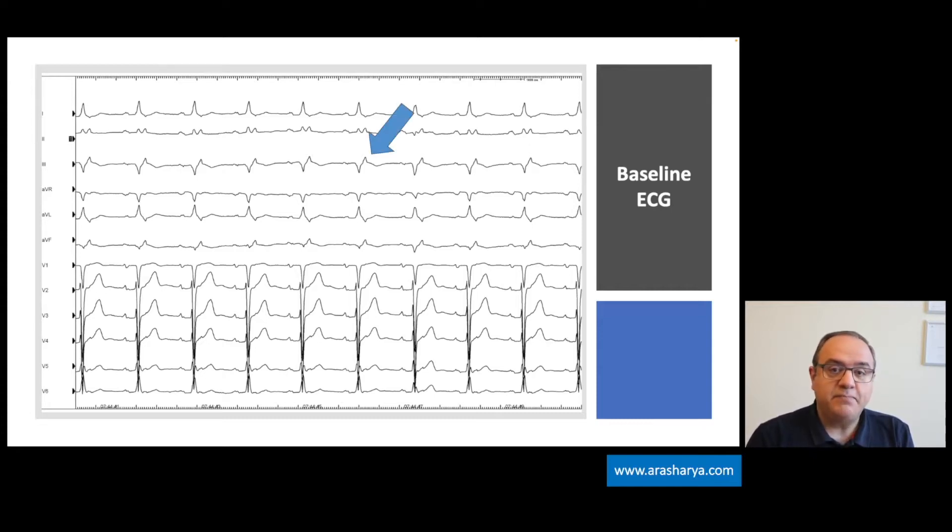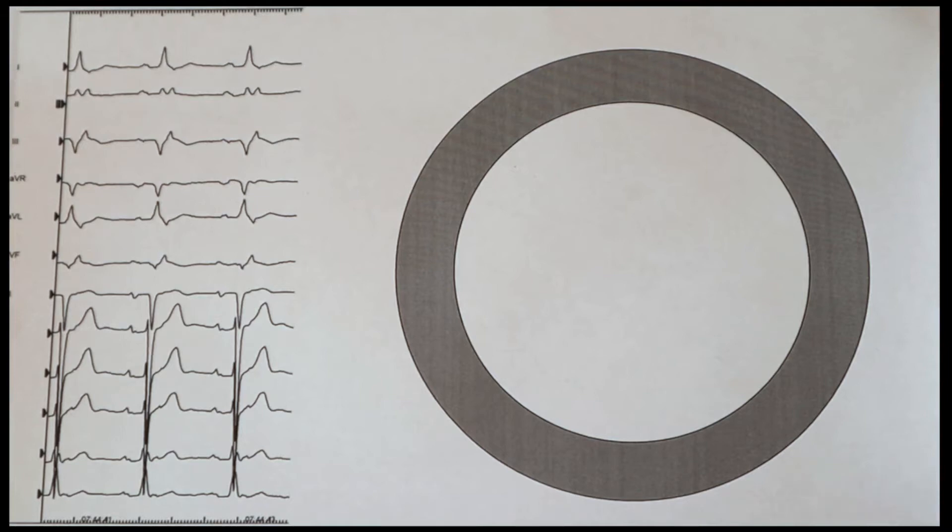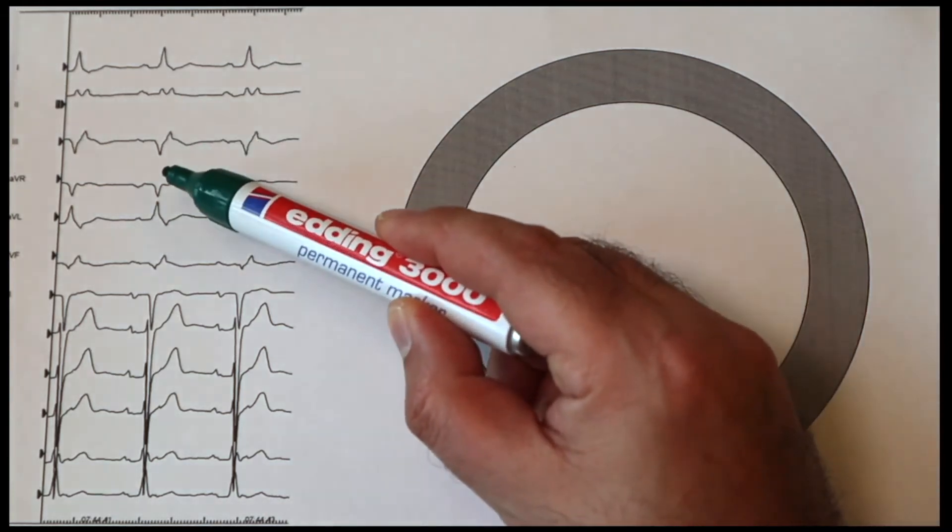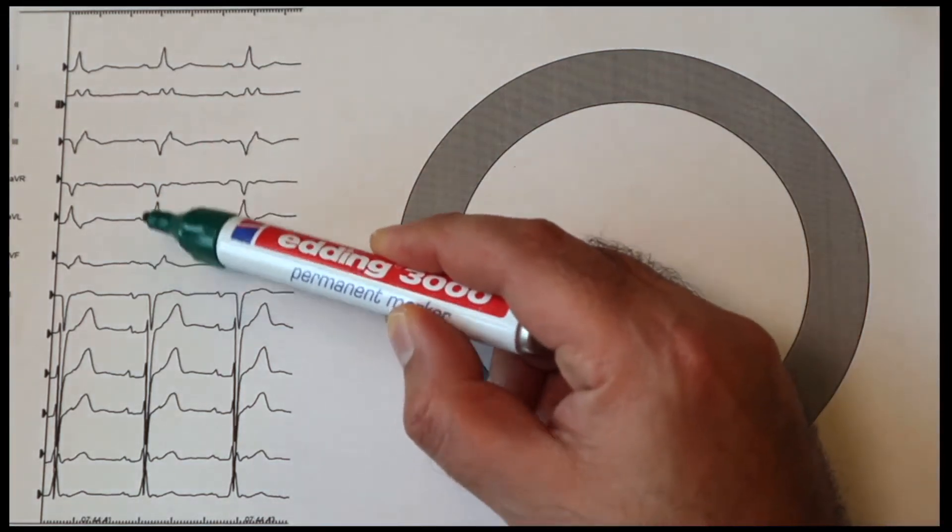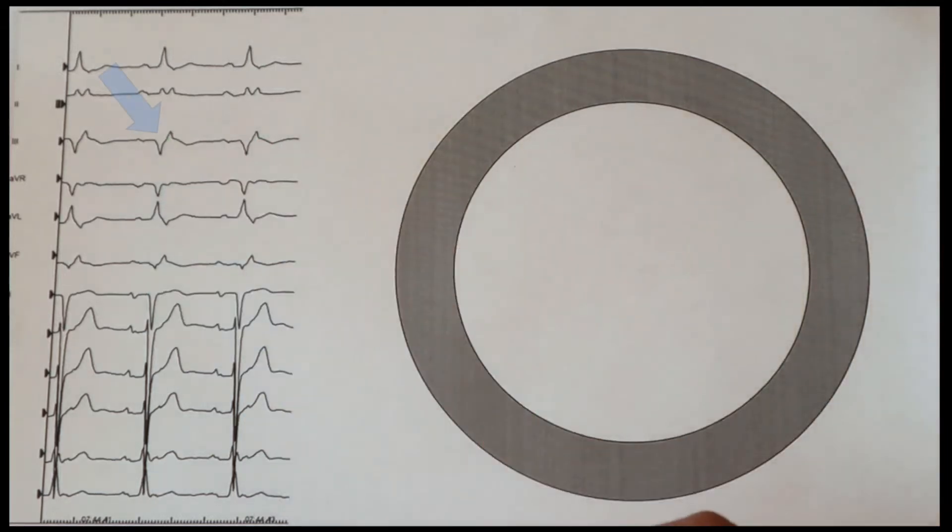Now let's look together to a short video for the explanation of these waves at the end of the QRS complex. Let's have a closer look at the ECG together. In lead III and also in lead aVF, we see a deep Q wave which shows an old inferior wall myocardial infarction.